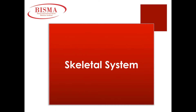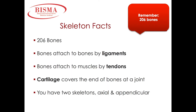Skeletal System. Facts about our skeleton: we have 206 bones within our body. Bones are attached to each other through ligaments, which are a form of connective tissue. Bones are attached to muscle via tendons, another type of connective tissue. Cartilage covers the ends of our bones at a joint, where two bone ends meet. We classify the skeleton in two separate sections: axial and appendicular.